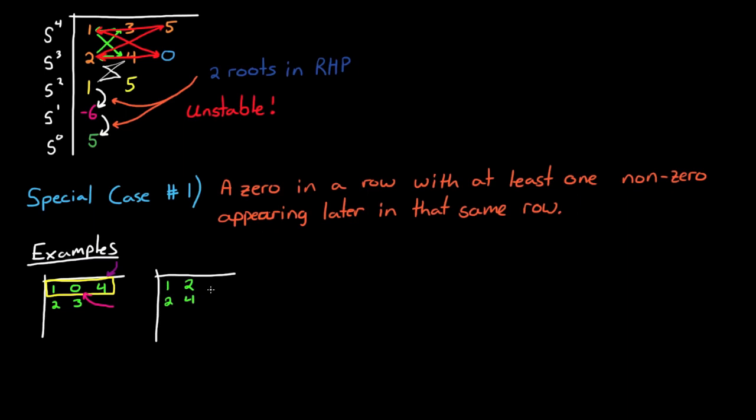Now in the second example, the first column has a 0, but it's also followed by a non-zero element. Same exact thing.